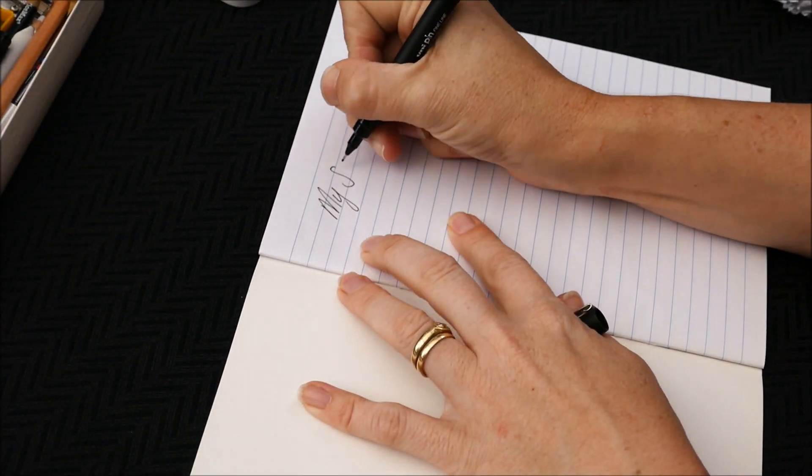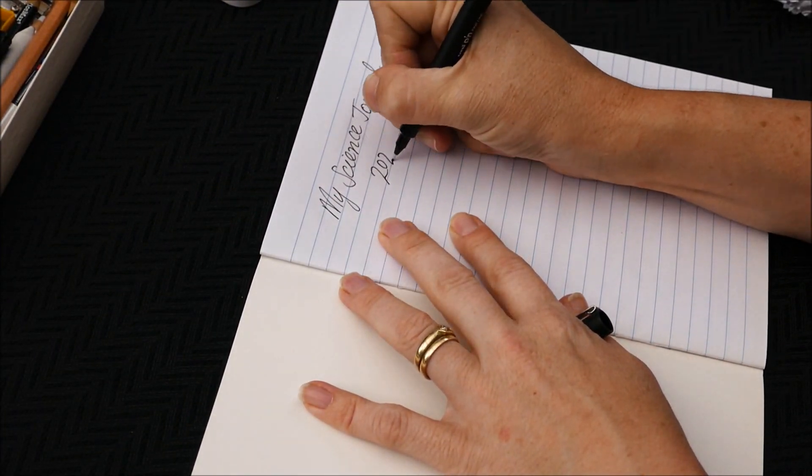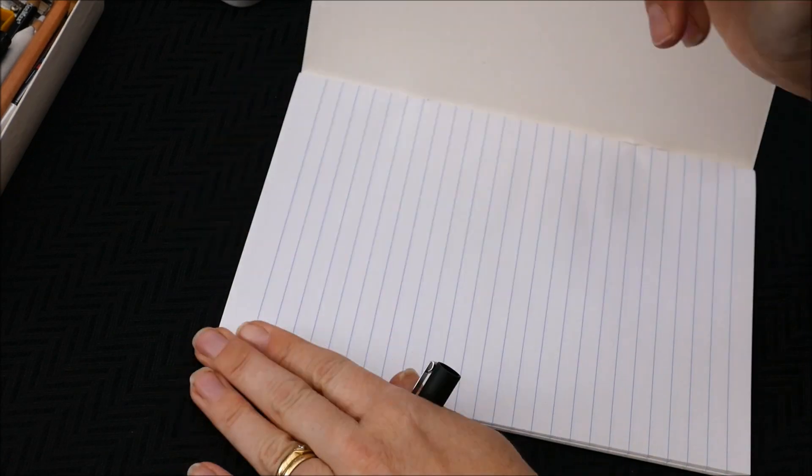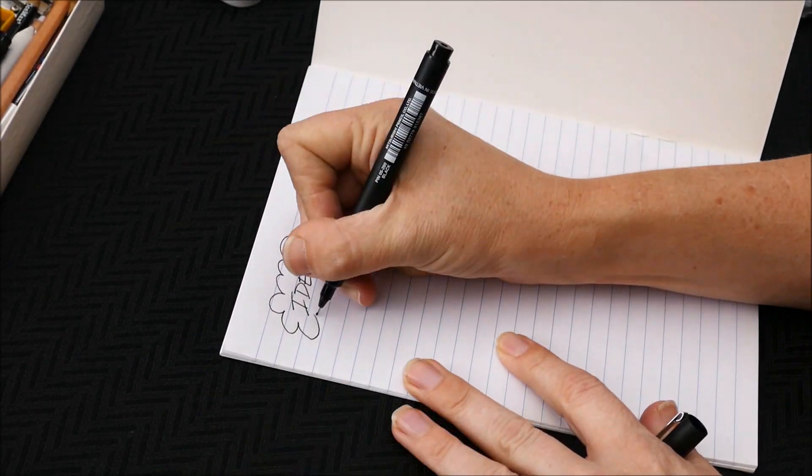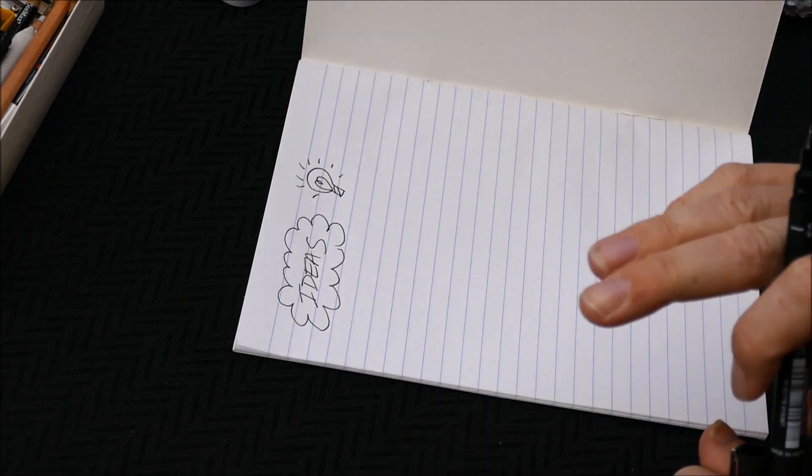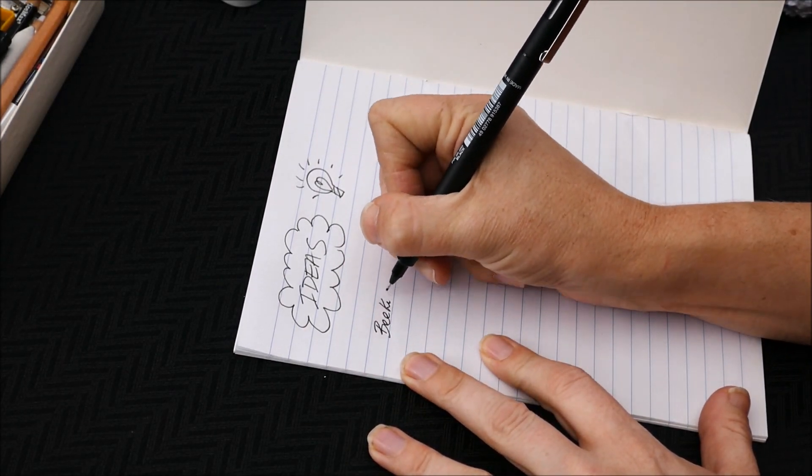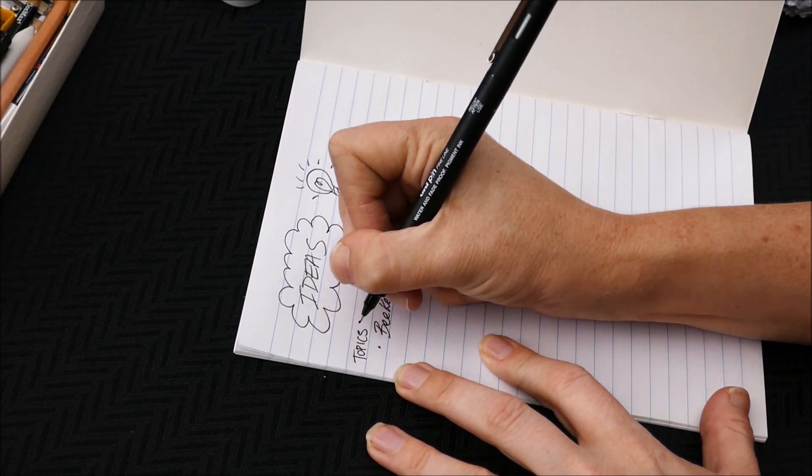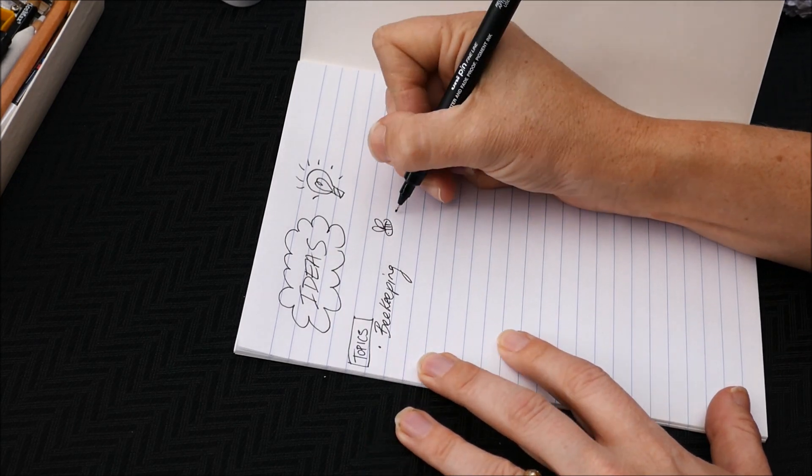Today I'm going to be talking to you about creating your very own science journal. The first thing you need is just any notebook that you've got lying around your house. Write in the front of it that it's your science journal. Now in this video you can see I've flipped to the back of the book and I'm actually starting with a list of ideas of things that I might want to learn about or write about in my journal. So you might like to do the same thing.